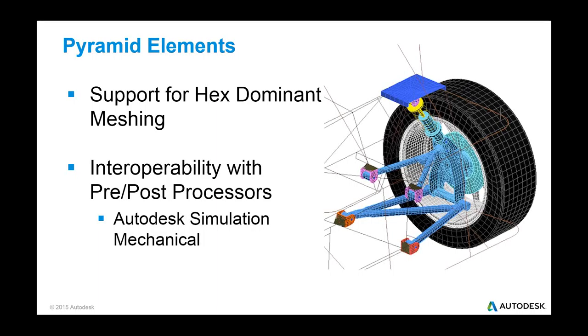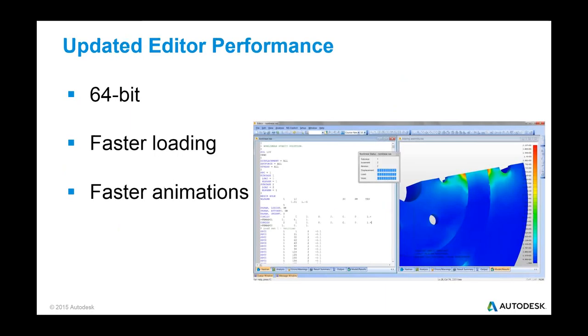And to effectively transition from a hex element to a tet, you need the pyramid element. So we support that now in Nastran so you can take full advantage of that with the meshing capabilities. Next one's probably not as important for simulation mechanical customers. And it's more for existing customer base. The workflow that we have inside simulation mechanical doesn't really use the editor. It's really meant for editing the Nastran bulk data file directly. But the big thing that we did there is improve the performance by adding 64-bit capabilities.